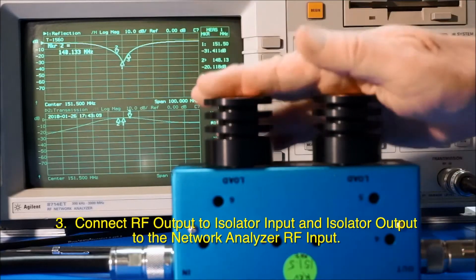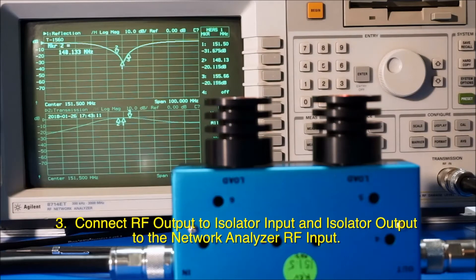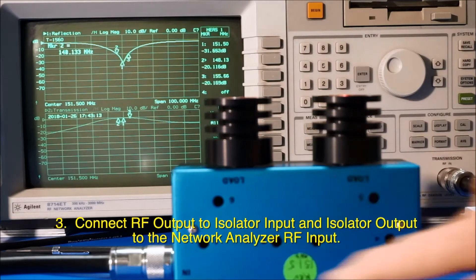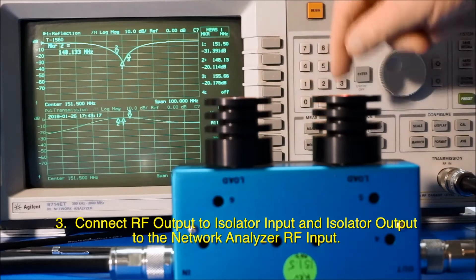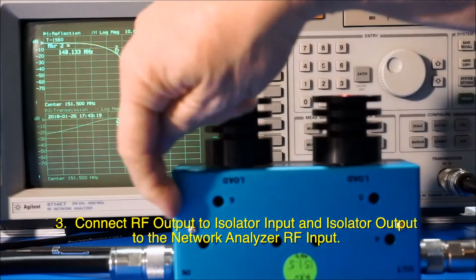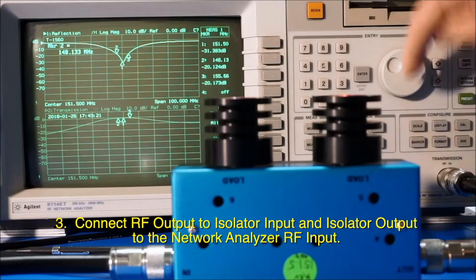I put the isolator here. This is the input, this is the output. This is the reflection port on this analyzer. The RF output goes in here, comes out here, and goes to the other port.